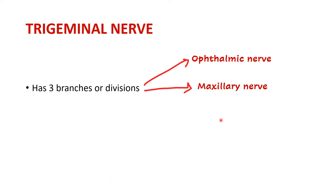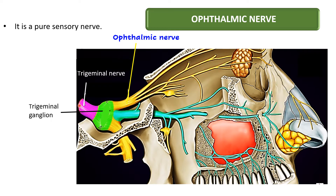The second division is the maxillary and the third is the mandibular nerve. I have made separate videos for the maxillary and mandibular nerves, and I will put links in the description box. In this picture we can see the trigeminal nerve and the trigeminal ganglion, with three branches arising from its anterior aspect. The ophthalmic and maxillary nerves are pure sensory nerves; it is only the mandibular nerve which is a mixed nerve.